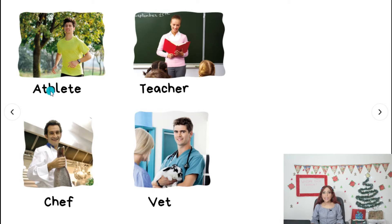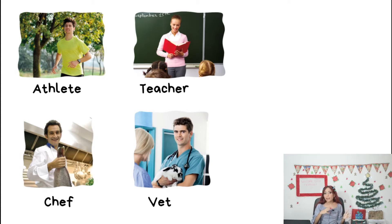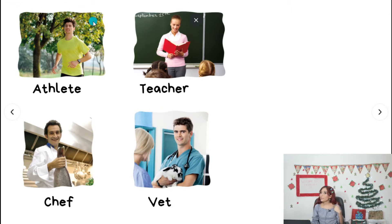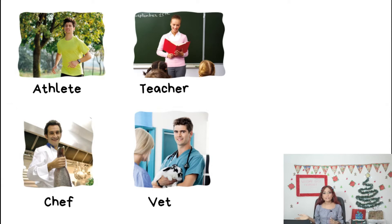Athlete — if you play soccer, if you like running, if you ride your bicycle, you are an athlete. There are different kinds of athletes; for example, a soccer player is called a soccer player but it's also an athlete, because you do sports. Teacher — like me! Chef — because it is a French word, so it is not pronounced 'chef,' it is 'chef.' It comes from French.